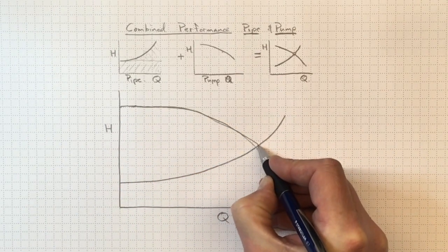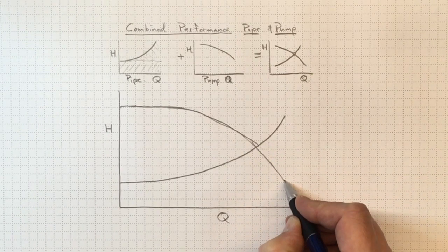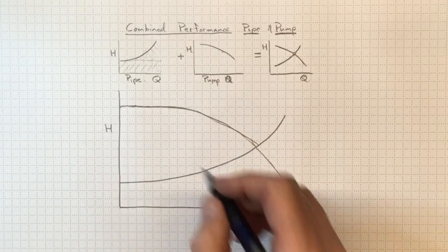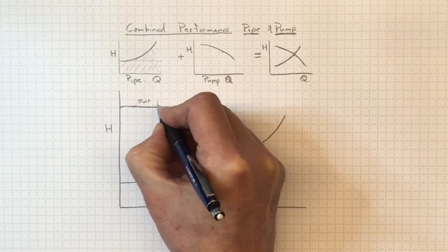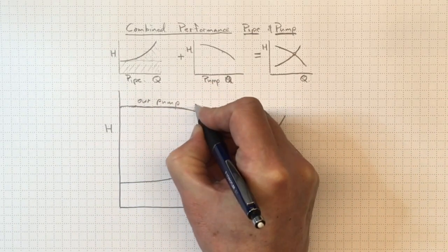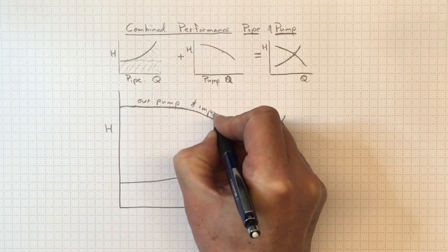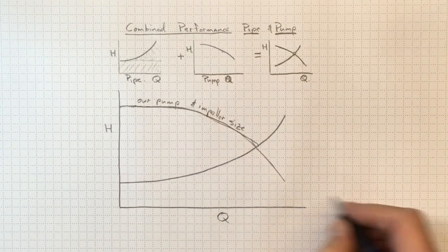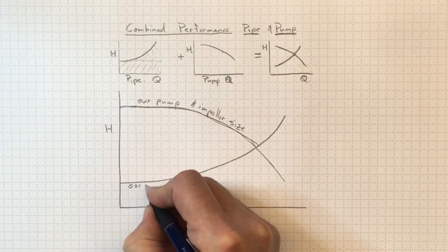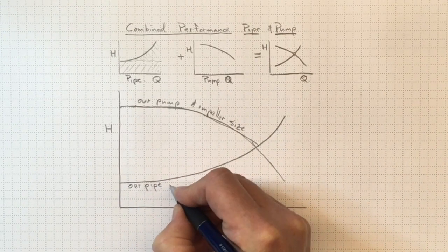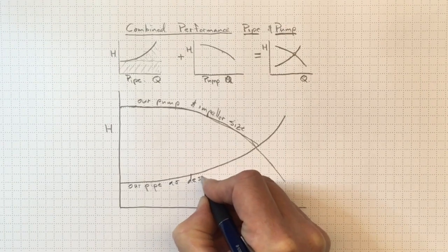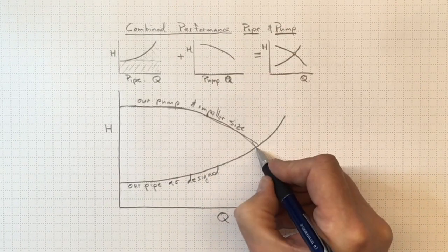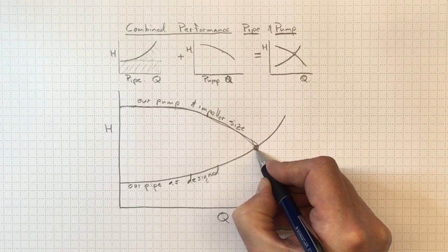We've taken this off the manufacturer's curve. We've ignored the other impeller sizes. We've only got the impeller size that we're going to use. So this is our pump that we've picked with the impeller size that we've picked, and this is our pipe with all of its fittings and everything as we've designed it. And when we put them together, this is where we expect our operating point to be.